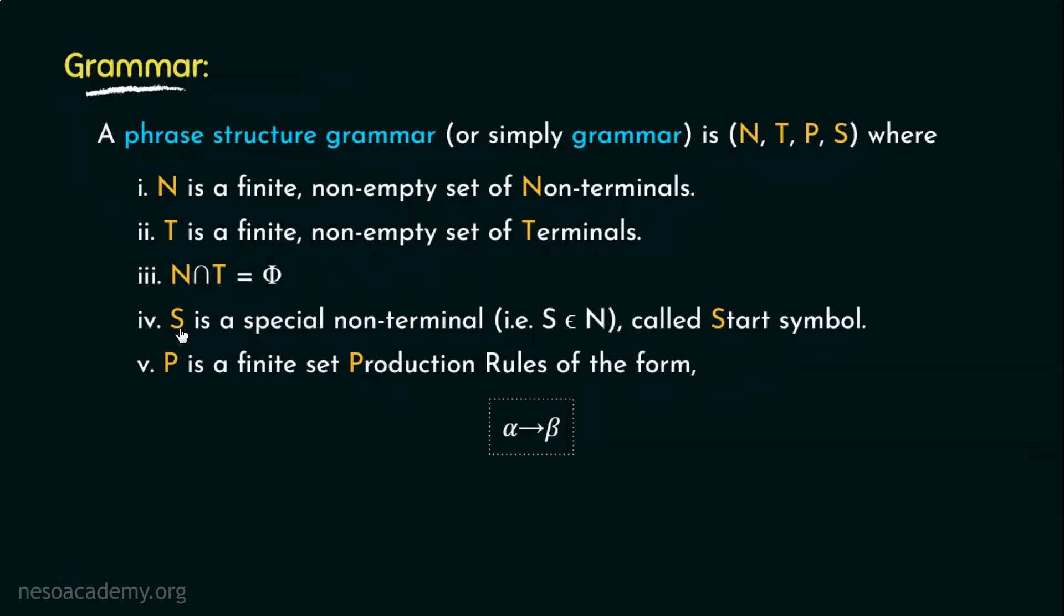And the derivation is done using P, which is a finite set of production rules of the form alpha can be rewritten as beta. P happens to be the most essential tuple of any grammar. Now, let's move on to the classifications.